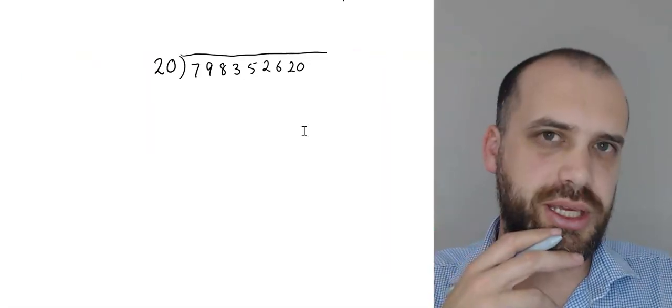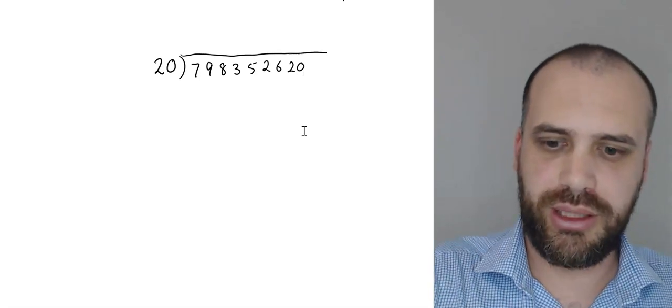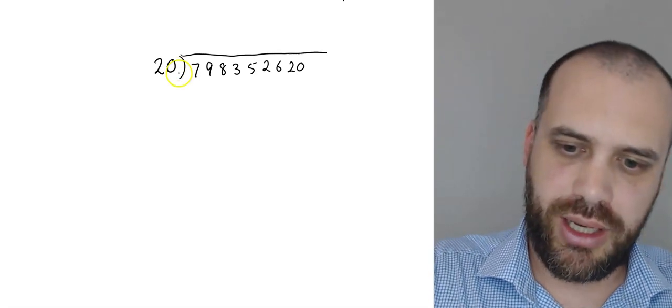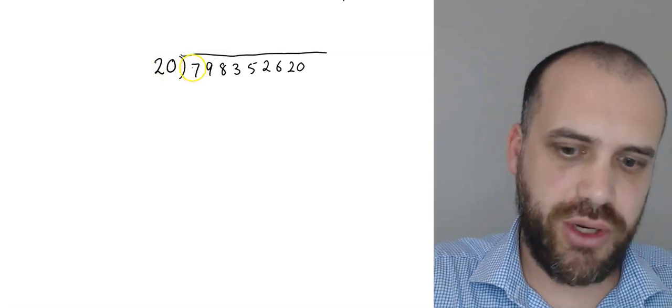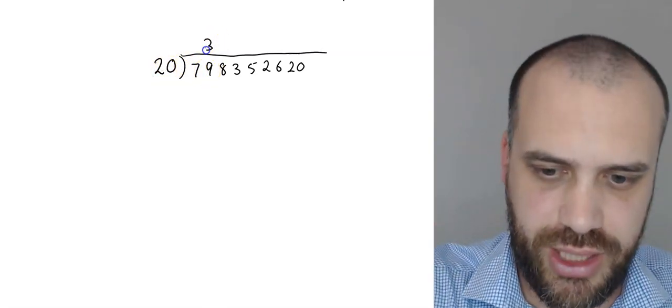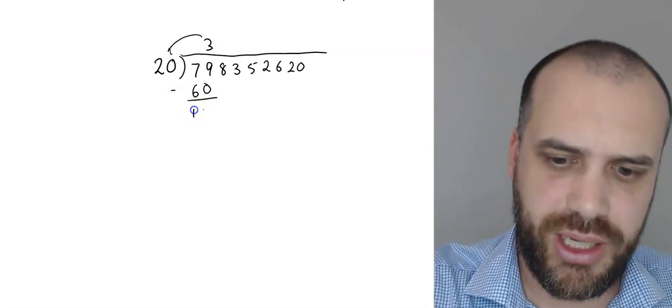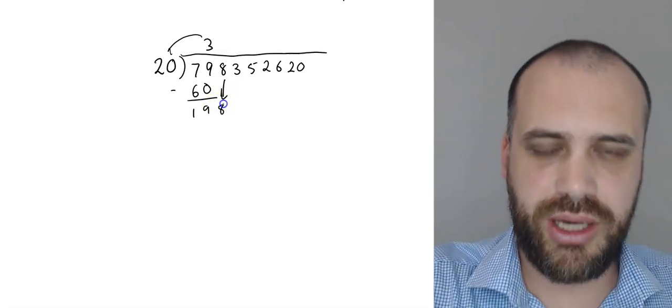Just in case you want to see what it looks like when I'm really working through this with a nice rhythm, let's try it one more time. Does 20 go into 7? No. Does 20 go into 79? Yes, it does. Three times. Three times 20 is 60. Subtract one from the other. We get 19. Drag the next one down.